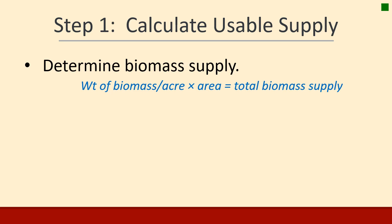The first step is to calculate the usable supply of forage. You take the weight of biomass per acre and multiply it by the total area in acres to get the total supply in pounds or kilograms. You can get that biomass weight by clipping grass or from book values related to soil, temperature, and precipitation. It's a simple approach: amount per acre times acres equals total biomass.